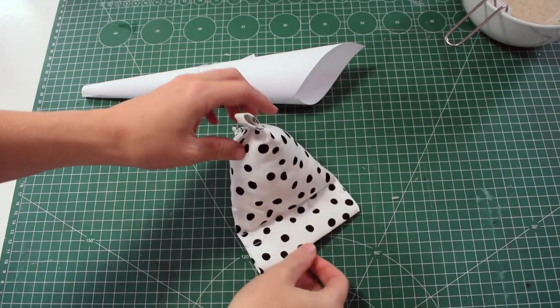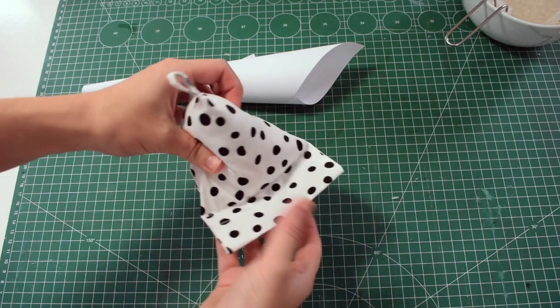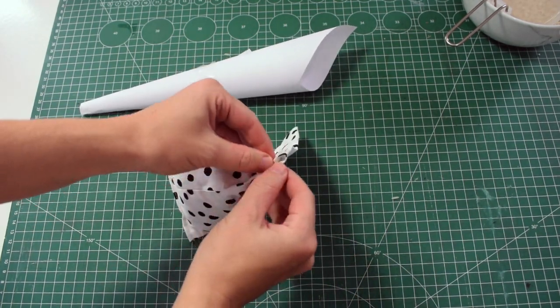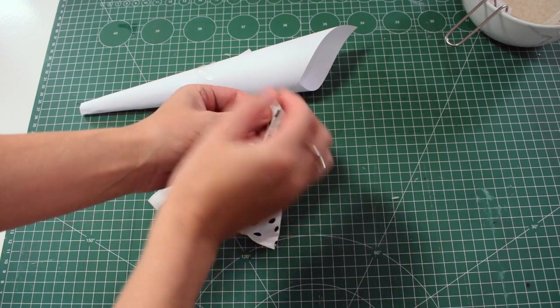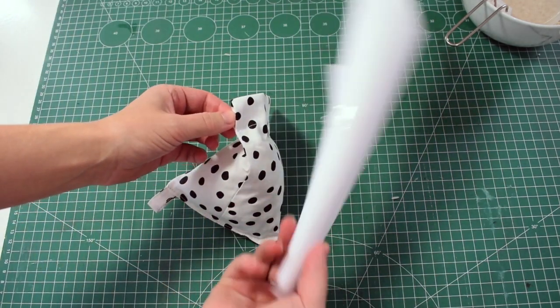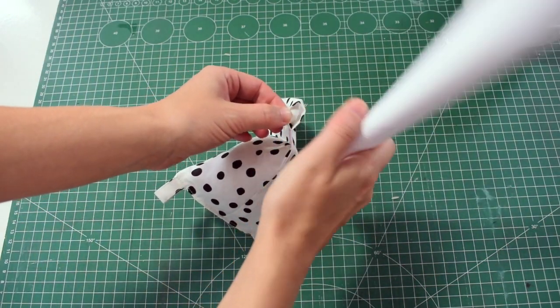Now this is sewn together it's time to put the rice at the bottom of the phone holder. Where we have left the hole we're going to sieve through some rice, leaving a gap at the top so we can stitch this together.